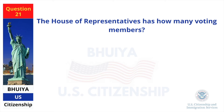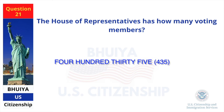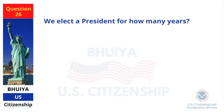The House of Representatives has how many voting members? We elect a President for how many years? Four.